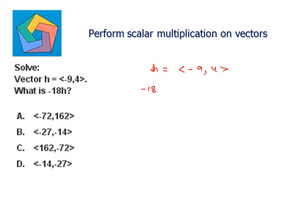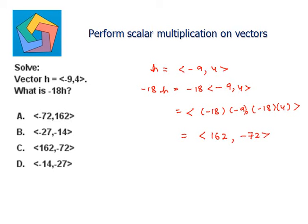So negative 18h will be negative 18 times negative 9 comma 4, which will be equal to negative 18 times negative 9, negative 18 times 4. So negative 18 times negative 9 is 162, and negative 18 times 4 is negative 72. So 162 comma negative 72 is the answer, which is in part C.